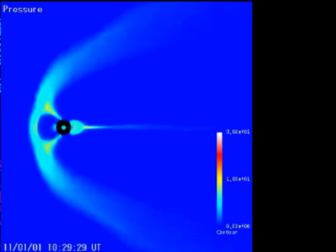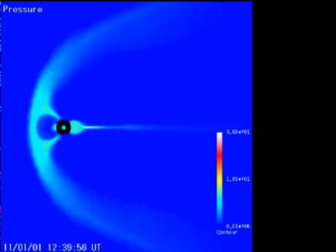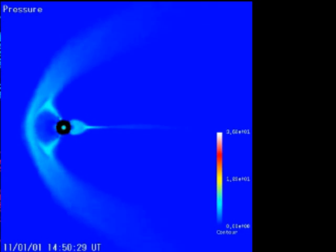The size of the breach took researchers by surprise. We've seen things like this before, says Raeder, but never on such a large scale. The entire dayside of the magnetosphere was open to the solar wind.